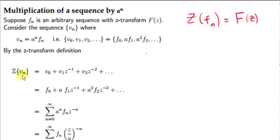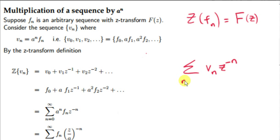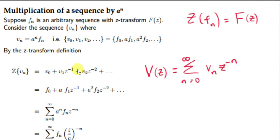Now let's consider the Z-transform of v sub n. To get the Z-transform of a sequence, we take an infinite sum of each term of the sequence, v sub n, multiplied by z to the power of minus n, summing from n equals 0 to infinity. This is the Z-transform of v sub n, which we can also write as capital V of z. Some terms printed out: when n is 0, we get v sub 0; when n is 1, v sub 1 times z to the minus 1; when n is 2, v sub 2 times z to the minus 2, and so on.